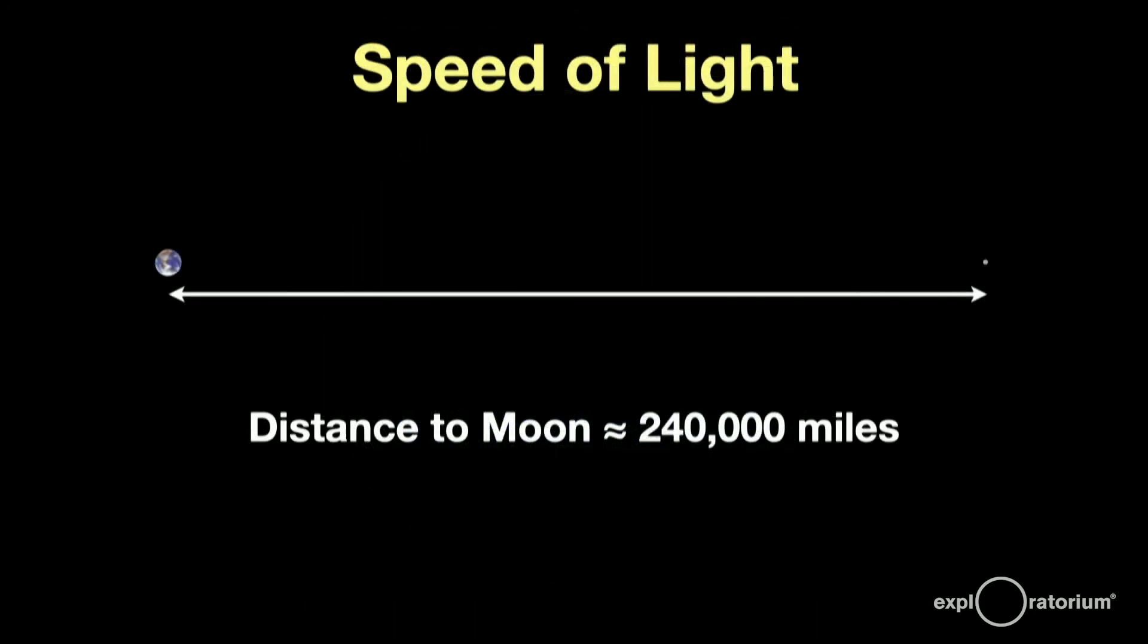Consider for a moment that light can travel around the Earth more than seven times in one second. What you see here is a proper scale model of the Earth-Moon system. Both Earth and Moon are properly sized and they're the correct distance from one another. It took the Apollo astronauts three days to reach the Moon in their tiny capsule.